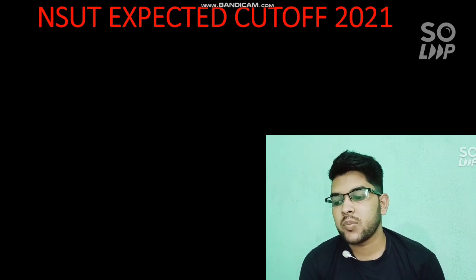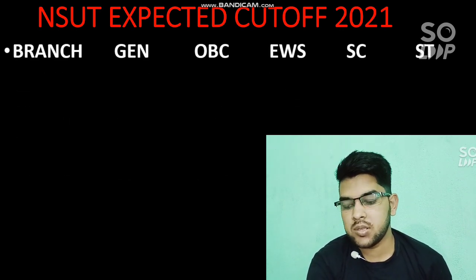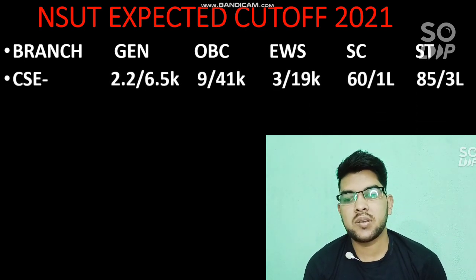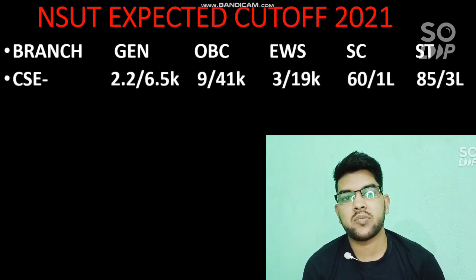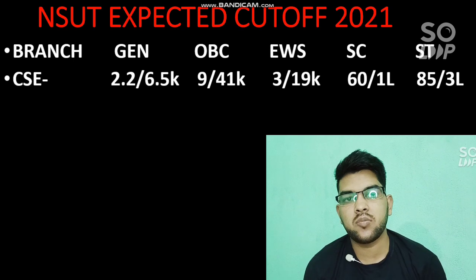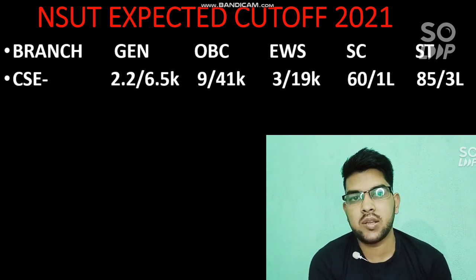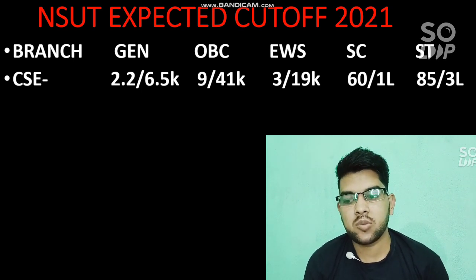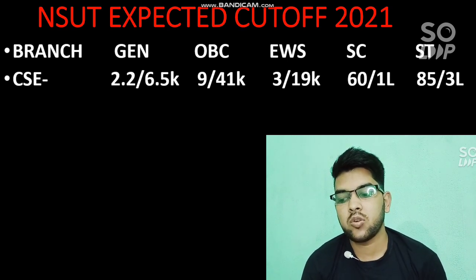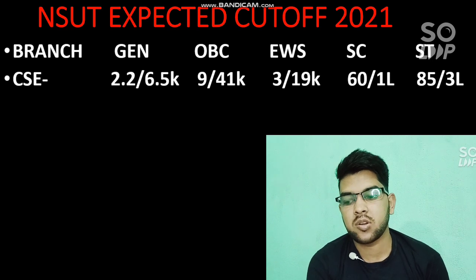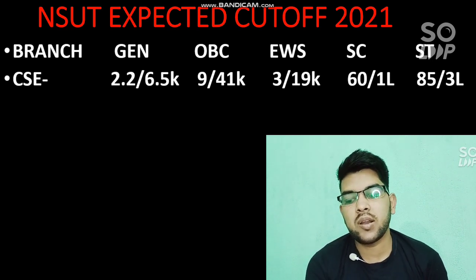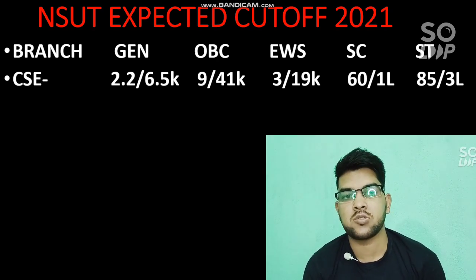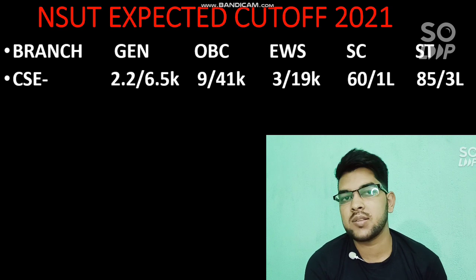Here is the information for all branches with all categories for NSUT. For the CS branch, for general candidates, 2,200 and 6,500 will be the expected cutoff for the Delhi and outside Delhi region respectively. After the slash is the Delhi region cutoff and before the slash is the outside Delhi region cutoff. For OBC: 9,000 and 41,000; EWS: 3,000 and 19,000; SC: 60,000 and 1 lakh; ST: 85,000 and 3 lakh. All are CRL JEE Mains ranks.